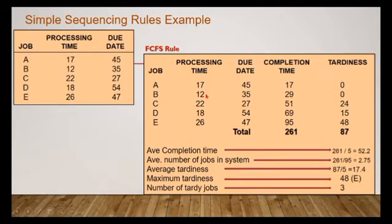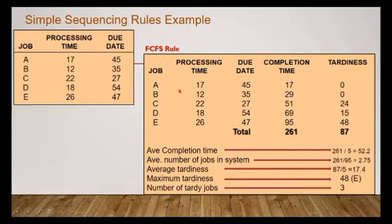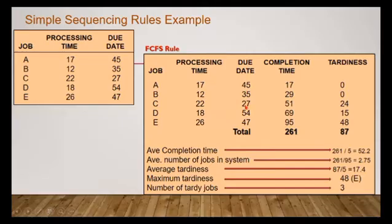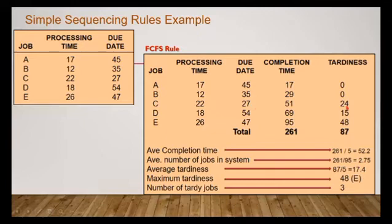Job C has a processing time of 22 and a due date of 27. The completion time for job C is the cumulative of the previous jobs, giving us 51. The job was supposed to be submitted by day 27, but it was only ready on day 51. So you subtract 27 from 51 to calculate the number of days the job was delayed — 51 minus 27 gives 24. The same calculation applies for the next jobs, and so on until you reach the last one.